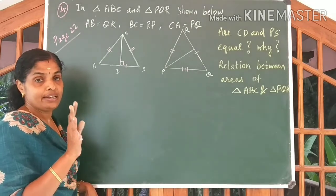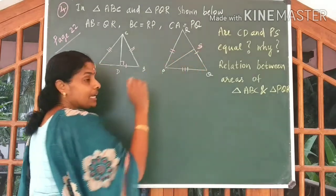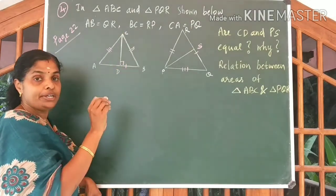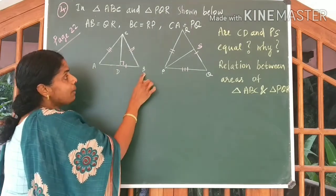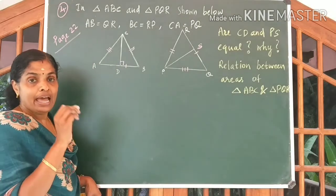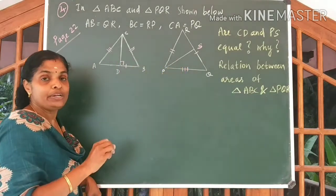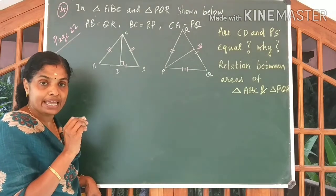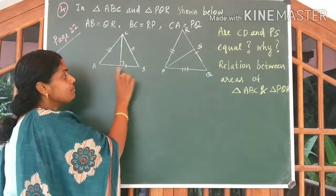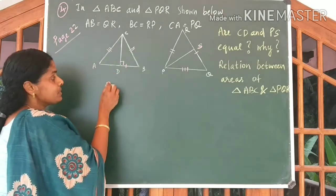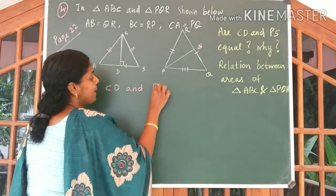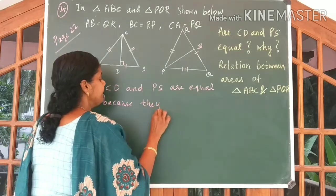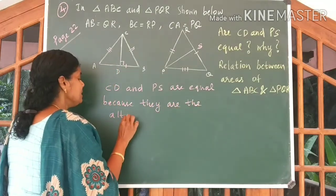Now, what is our question? Are CD and PS equal? Of course they are always equal, because they are the perpendiculars drawn to the same side. Here, AB and RQ are given to be equal. We know these two triangles are equal triangles. Therefore, the altitudes CD and PS will always be equal because they are the altitudes drawn to the same side. So you have to say CD and PS are equal because they are the altitudes drawn to the same side.